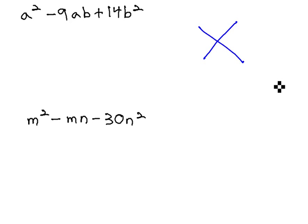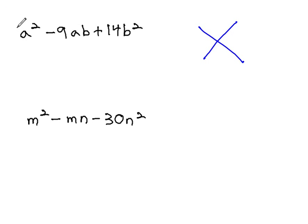Using the AC method, we would want to multiply to 1 times 14, or 14, and add to negative 9.